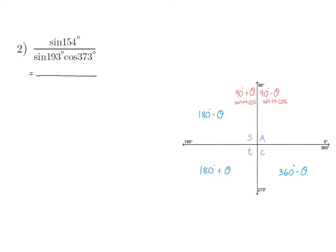So if I look at my numerator, I have sin of 154. That will be in my second quadrant, where sin is positive, so it stays positive sin. And now I need to ask myself, 180 minus what will give me 154, and that is 26 degrees.